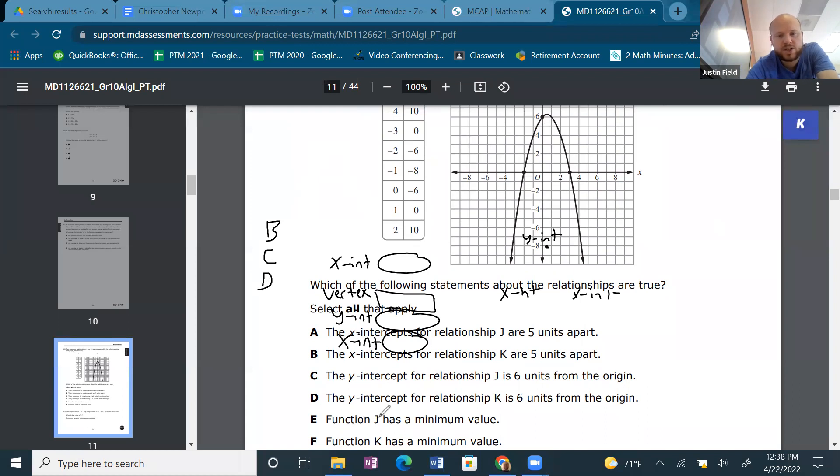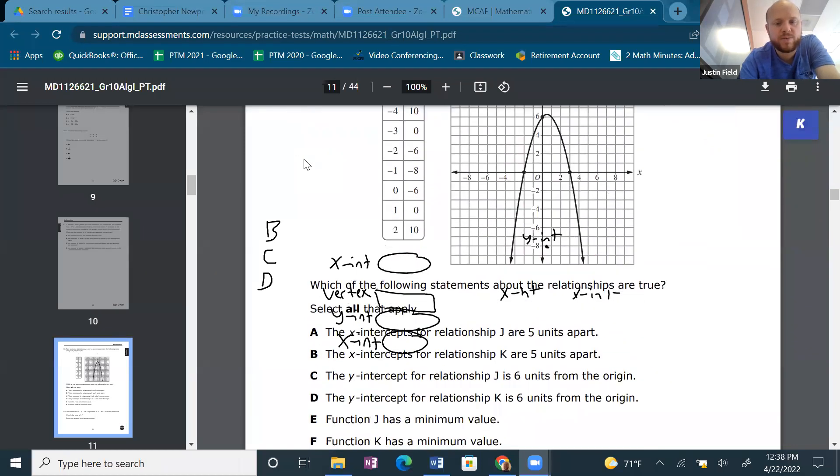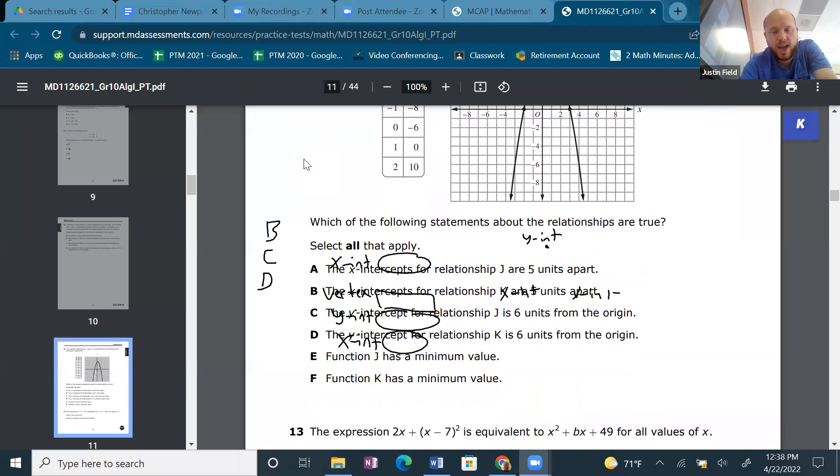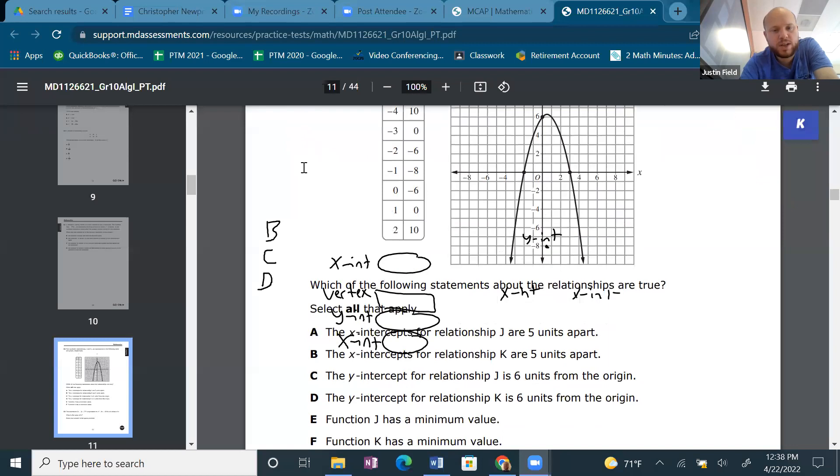The function J has a minimum value. Which one is J again? Yes, it does. It has a minimum value. The lowest value. And K has a maximum value. So E is also right.